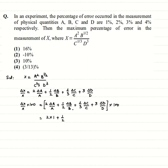plus 1/2 times the percentage error in B which is 2, plus 1/3 times the percentage error in C which is 3, plus 3 times the percentage error in D which is 4. So this comes out to be 2 times 1 plus 1/2 times 2, which is 1, so 2 plus 1 is 3. 1/3 times 3 is 1 again, so 3 plus 1 is 4. 3 times 4 is 12.